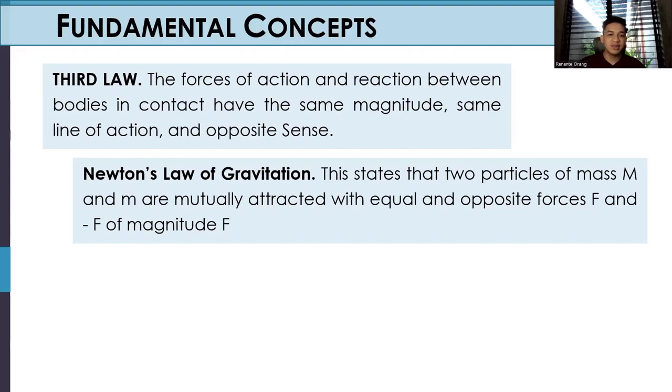Newton's Law of Gravitation. This states that two particles of mass capital M and small letter m are mutually attracted with equal and opposite forces capital F and negative F of magnitude F. Given with its formula, F is equivalent to our universal gravity multiplied by capital M, multiplied by its small m, and divided by r squared. Capital M is the mass of the first object, small letter m is the mass of another object.